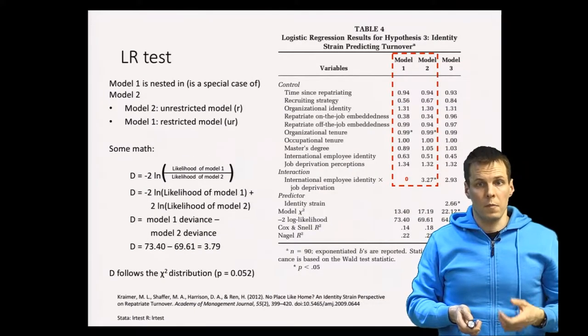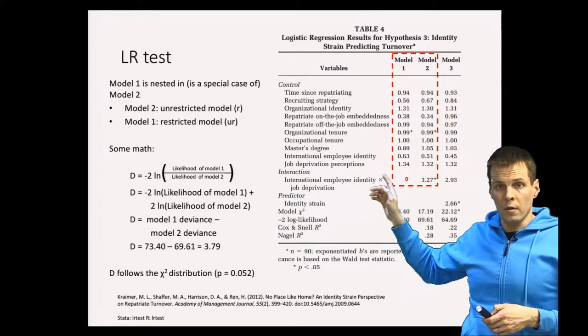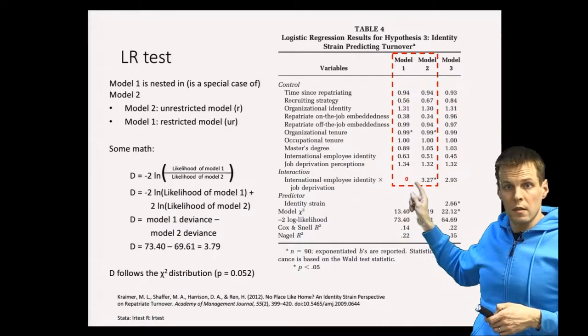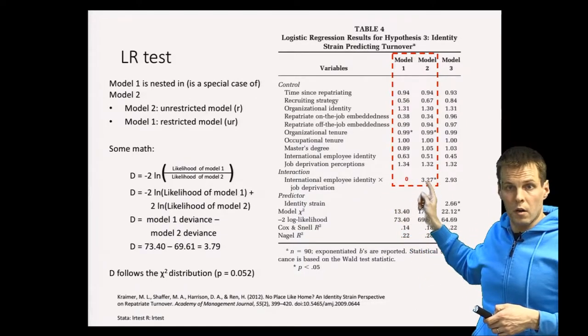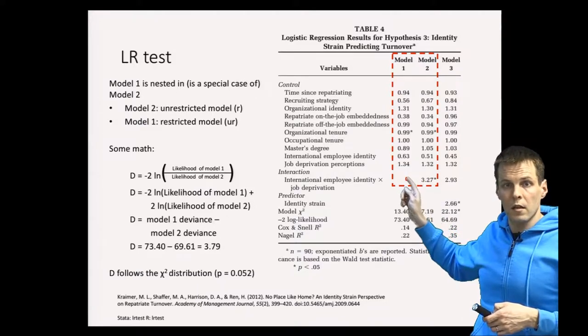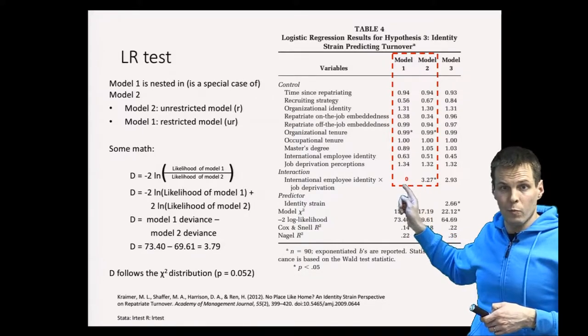So here in Cramer's paper we have two models. Model 1 is the constraint model. Model 2 is the unconstrained model because we have this coefficient here that's estimated here; it is constrained to be zero. So we have one degree of freedom difference between these two models.